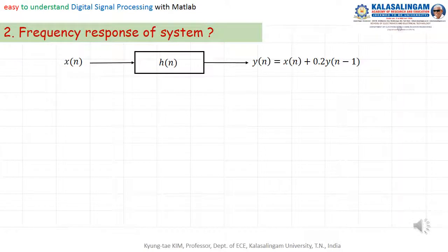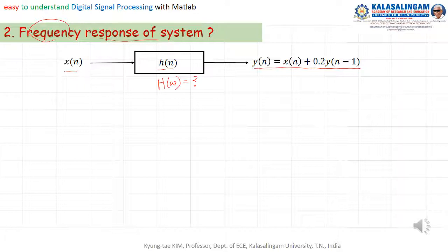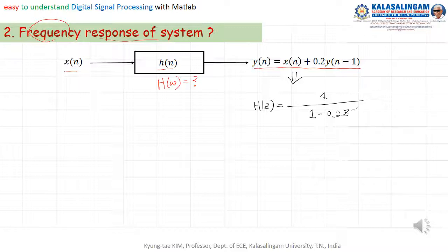Next: how do we know the frequency response of the system? Given the input, impulse response, and output — how do we know the frequency response? That means h(omega) equals — how do we find that? For that, we can also use the G-transform. As I said before, we already have H(G) equal to 1 divided by (1 minus 0.2 G to the power minus 1).